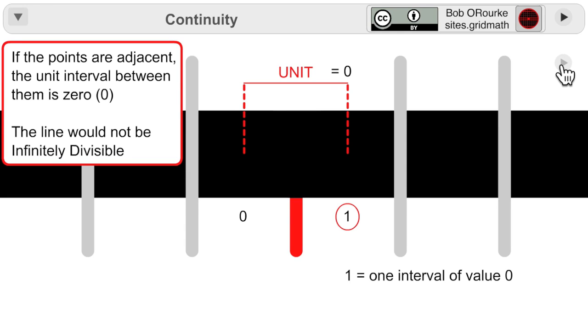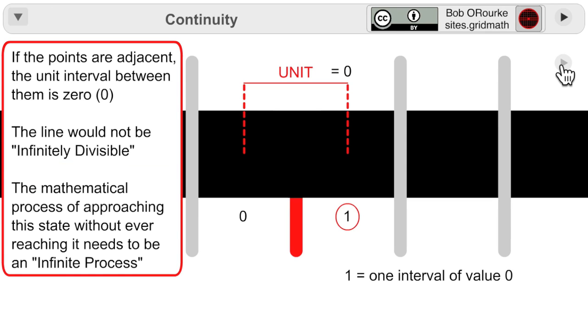When the points are adjacent, the line might be continuous but no longer infinitely divisible. The way I'm thinking of it here, the mathematical process of approaching this state without ever reaching it is the infinite process.